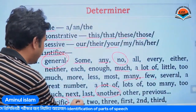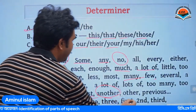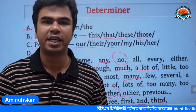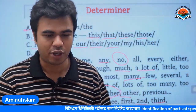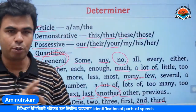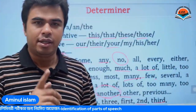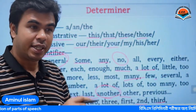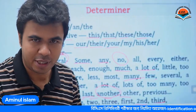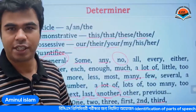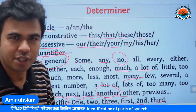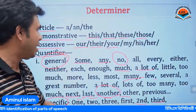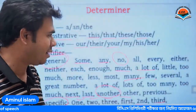This is the specific determiner. Specific determiner: one, two, three, first, second, third. We will take the determiner. So, the determination — we will take the determiner. For the determiner, the adjective. The determiner has four parts: article, demonstrative, possessive, quantifier.